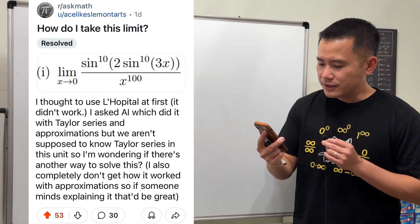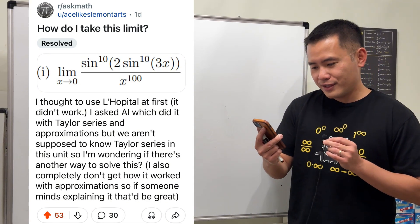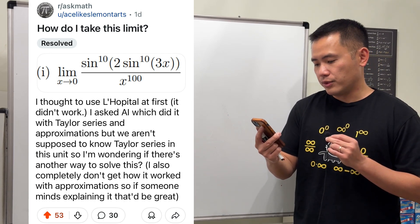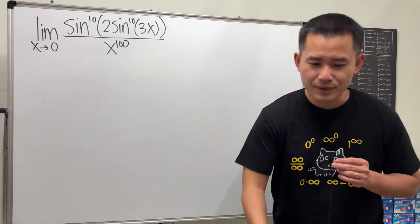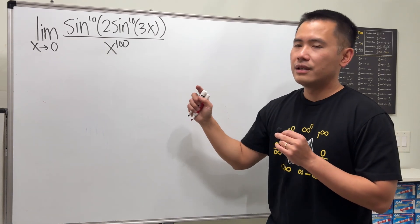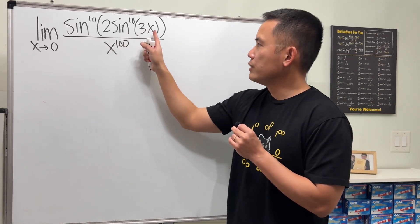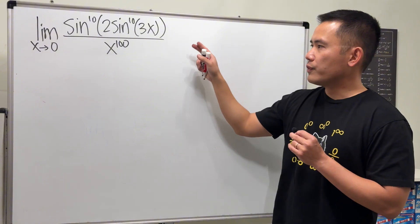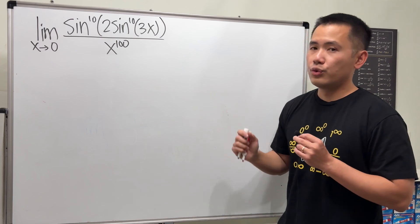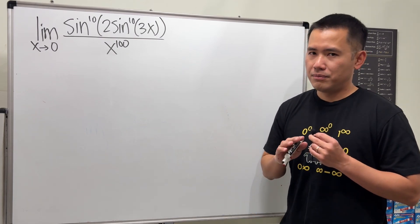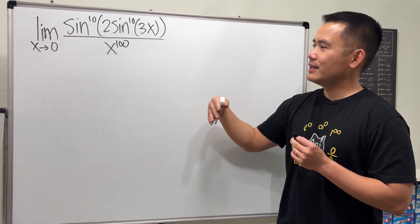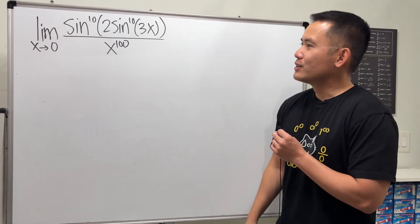How do I take this limit? I thought to use L'Hôpital's rule at first but it didn't work. I asked AI, which did it with Taylor series and approximations, but we are not supposed to know Taylor series in this unit. Let's have a look. We are going to compute the limit as x approaches zero. If we put zero in for x, we get zero over zero, which is indeterminate — meaning we will have to do more work. Don't use L'Hôpital's rule because when you take the derivative twice, you really don't want to continue.